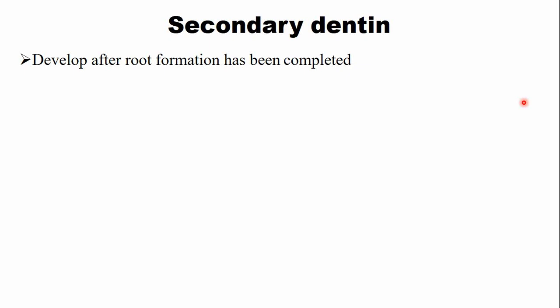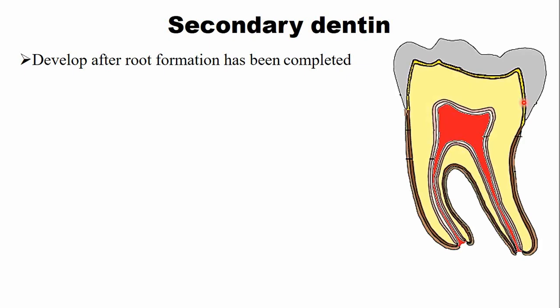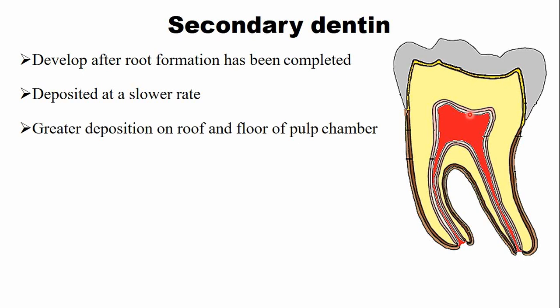The second type of dentine is the secondary dentine. The secondary dentine develops after root formation has been completed, as shown by the pink color in this diagram. It is deposited at a slower rate and continues throughout life. Secondary dentine is deposited more at the roof and floor of the pulp chamber, resulting in unequal deposition.